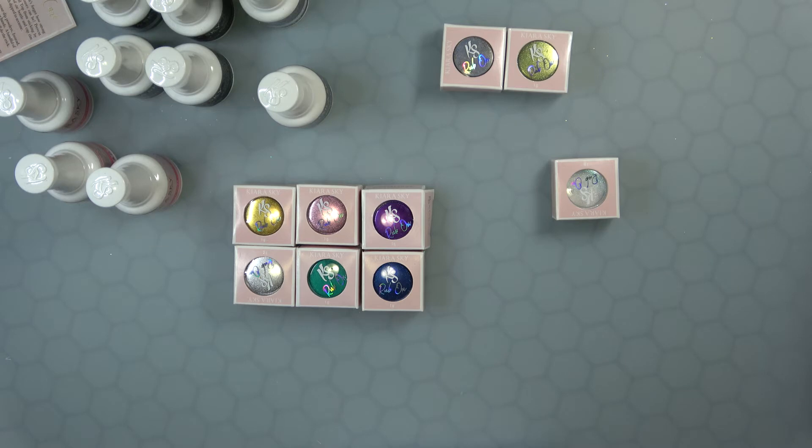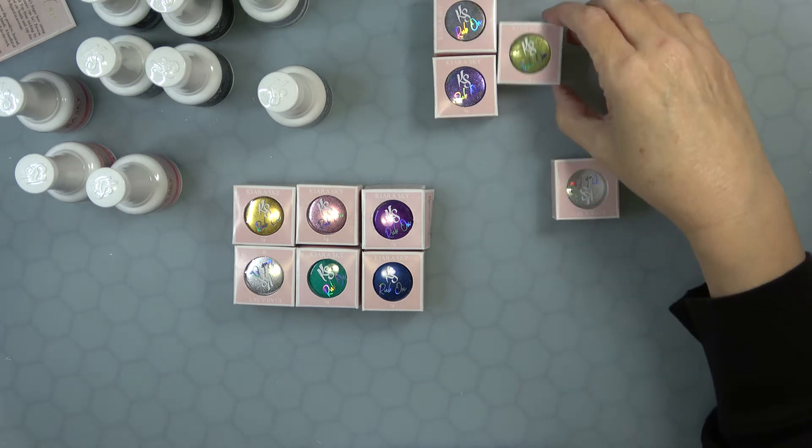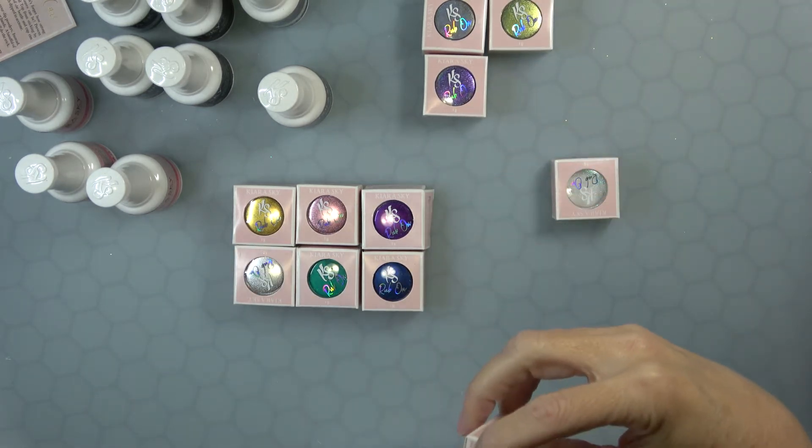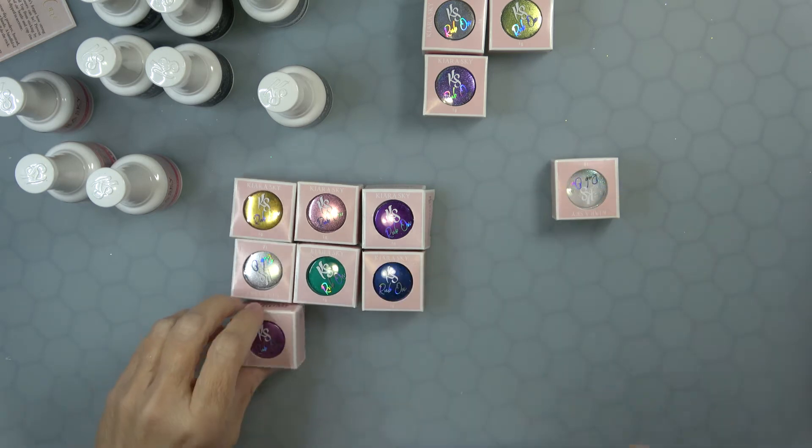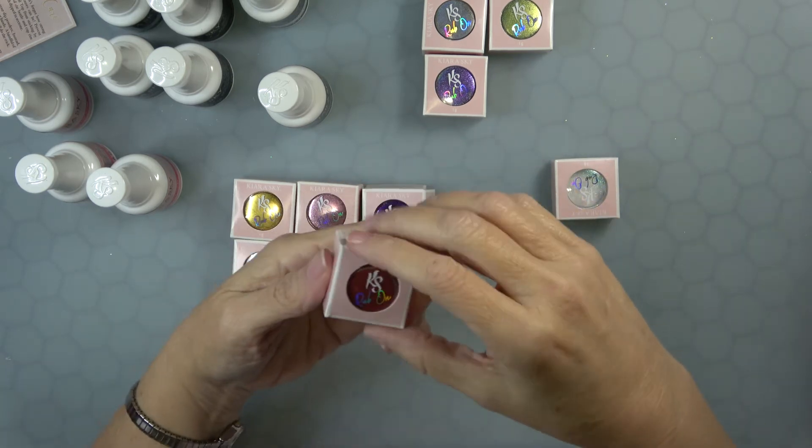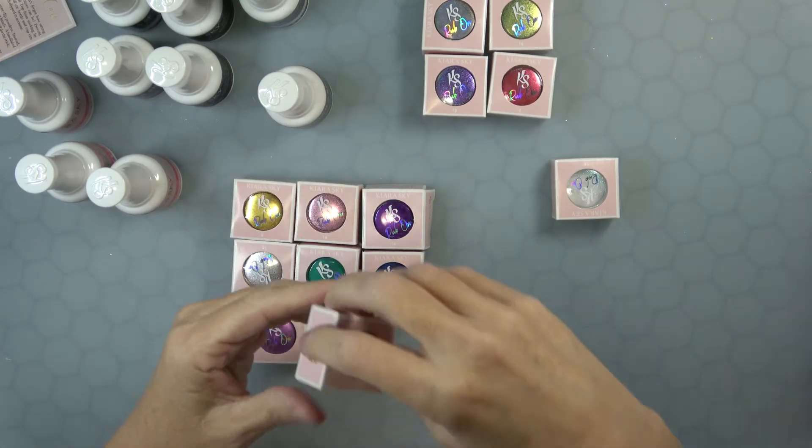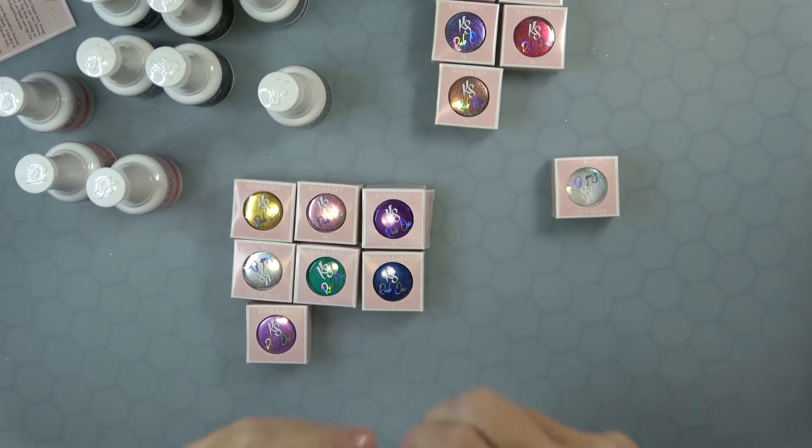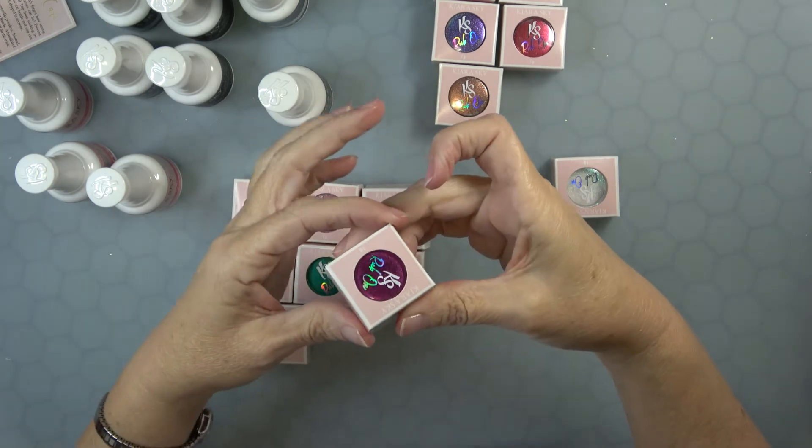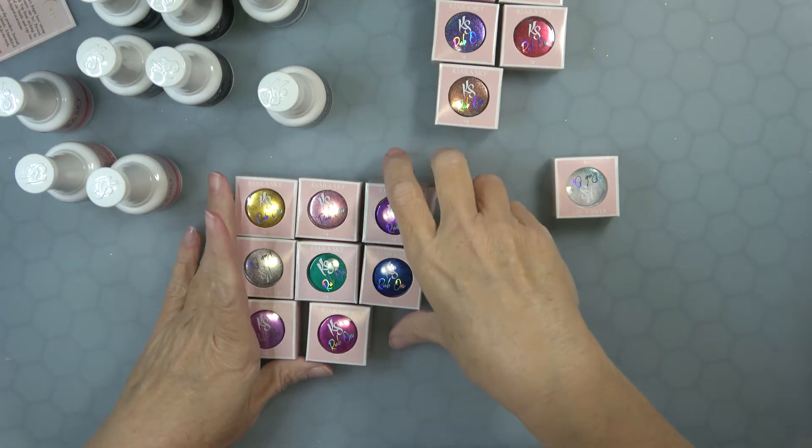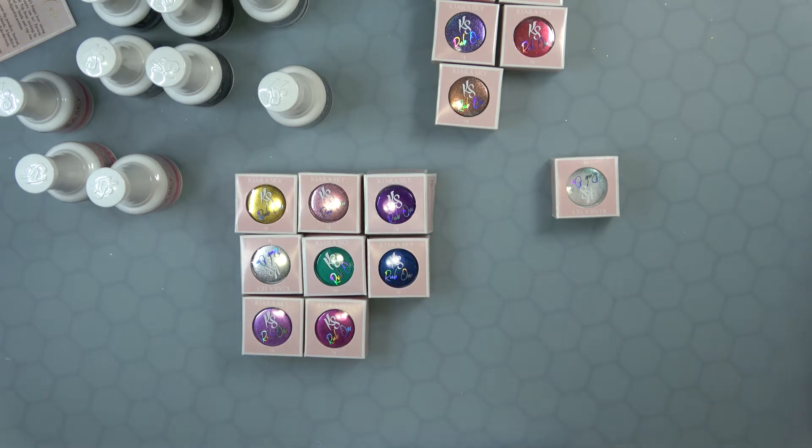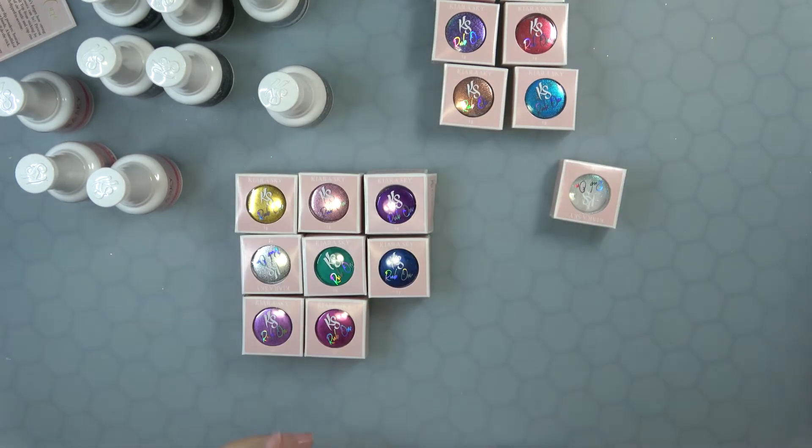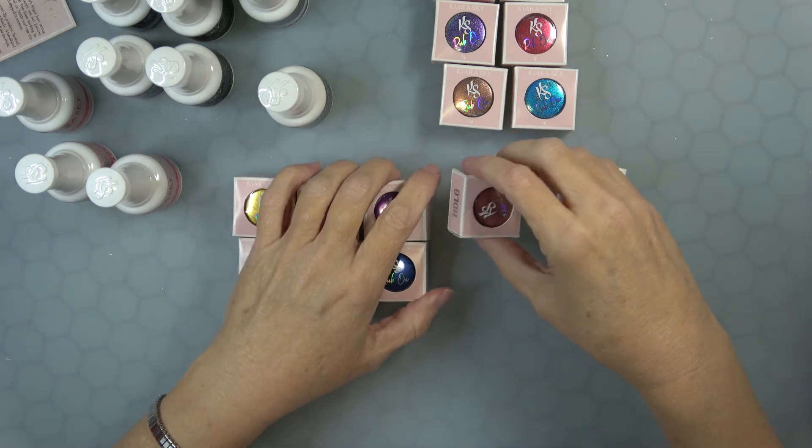We have another hollow. They're holographic, oh that's so pretty. This one is a chrome. Another hollow, another hollow, another hollow, chrome. Wow, this is beautiful. Look at that fuchsia color. Can't wait to try these and swatch them. This one is hollow, hollow.